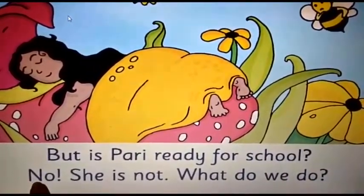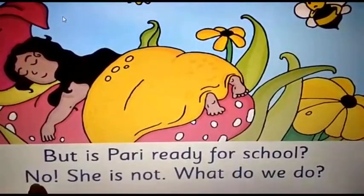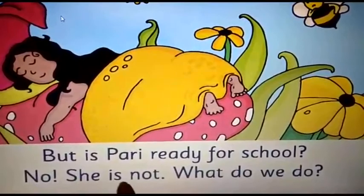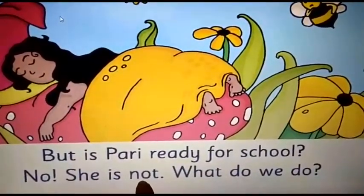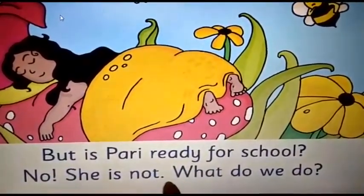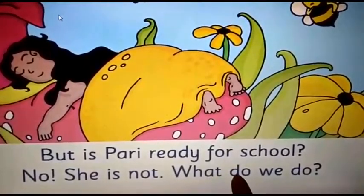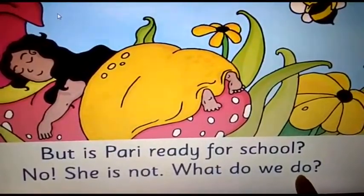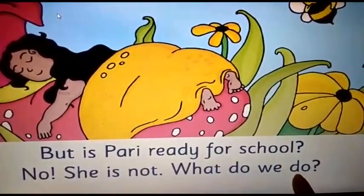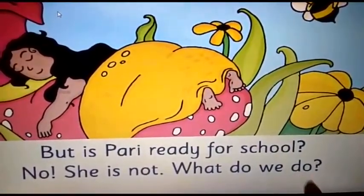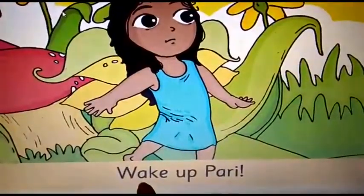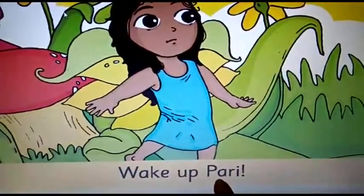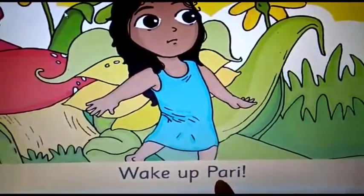Which word is this? Guess. No. She is — which word can it be? Not. What do we — this word has already come in this sentence once, so which word is this? Do. Wait. Up. This name we have already read once. Pari.